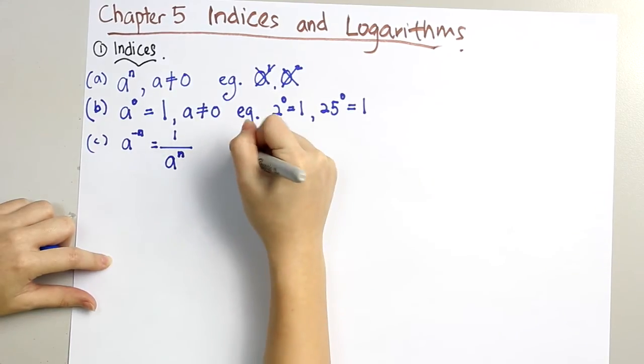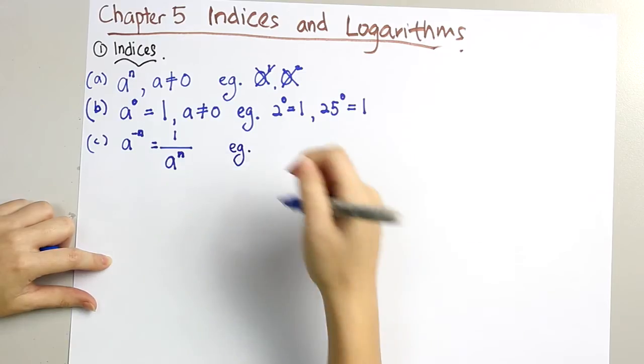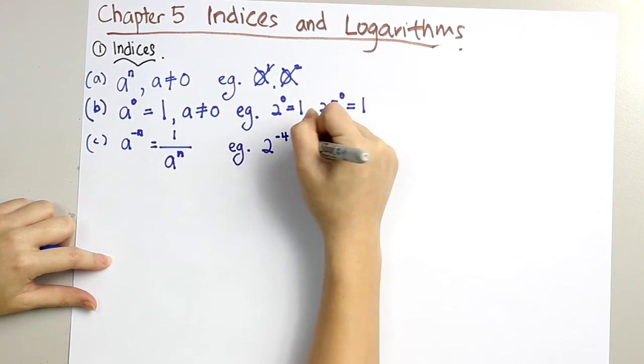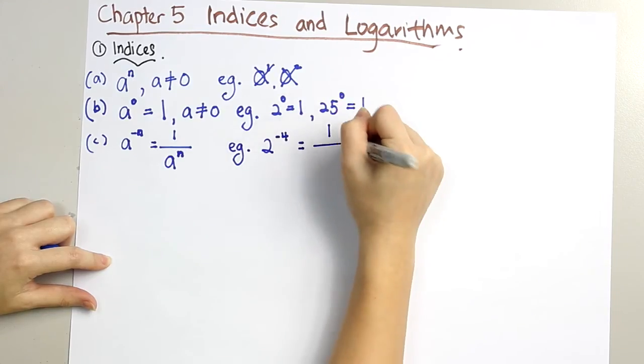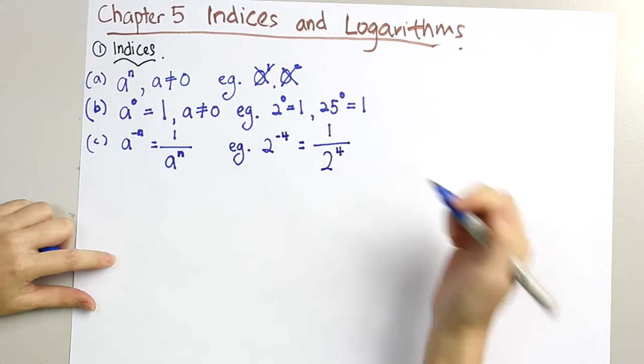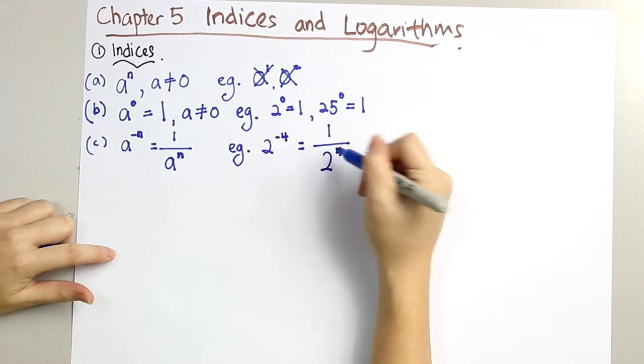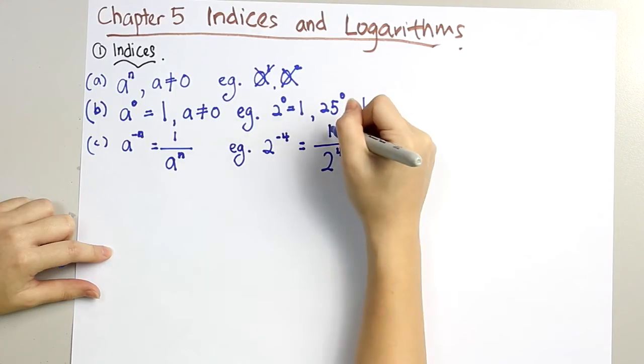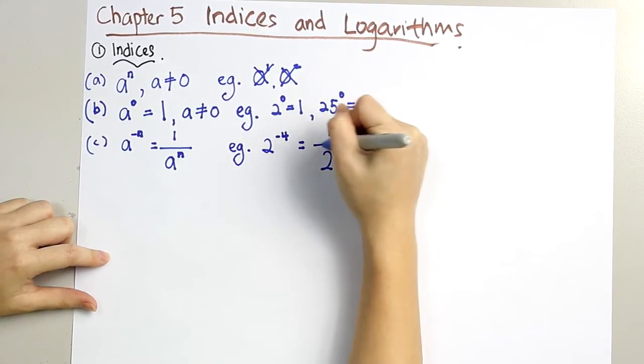So for example, 2 to the power of negative 4 is actually equal to 1 over 2 to the power of 4. Note that you do not have to put the negative sign for the 4 as it is already in a fraction. Put it under a 1.